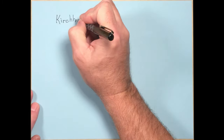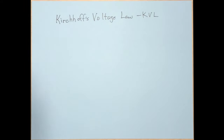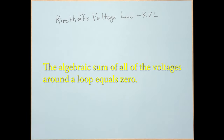Now let's talk about KVL — Kirchhoff's voltage law. KVL is equally simple, except it applies to voltages rather than currents. It says: the algebraic sum of all of the voltages around a loop equals zero.